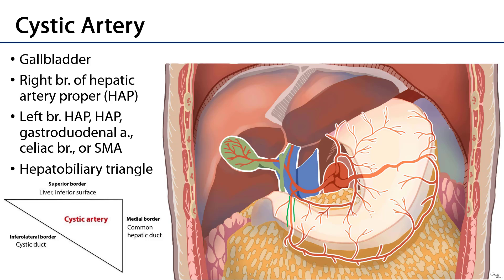As it is quite variable in origin, it's important to know that one of the most frequent places you can locate the cystic artery is within the hepatobiliary triangle. The hepatobiliary triangle has three sides: the superior side is the visceral surface of the liver, the inferolateral border is the cystic duct, and the medial border is the common hepatic duct. In the majority of cases the cystic artery will be found within this hepatobiliary triangle.